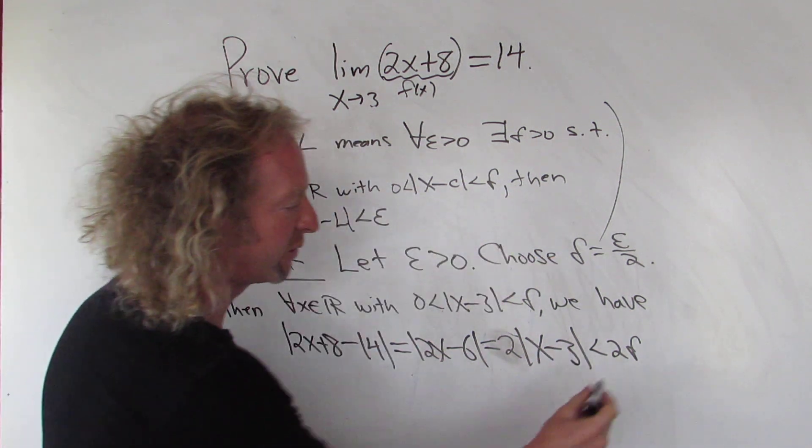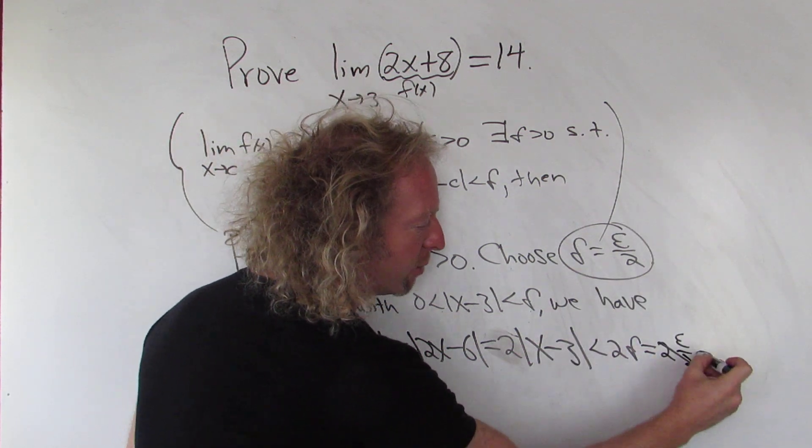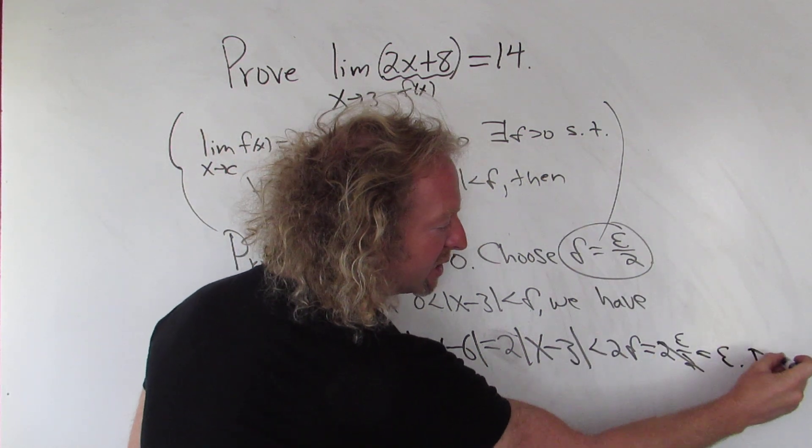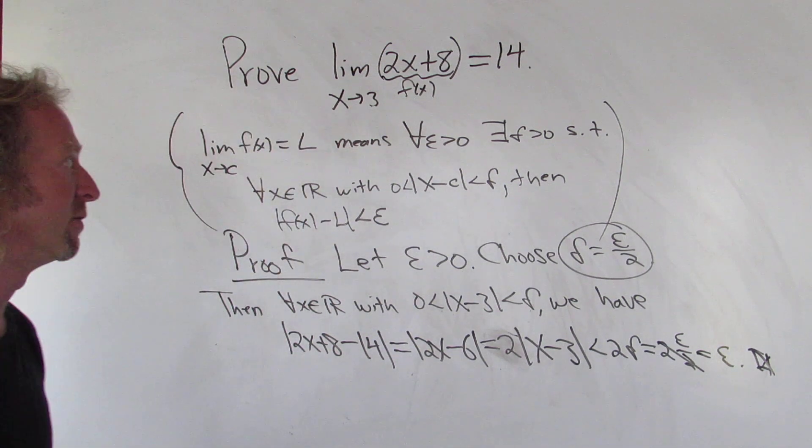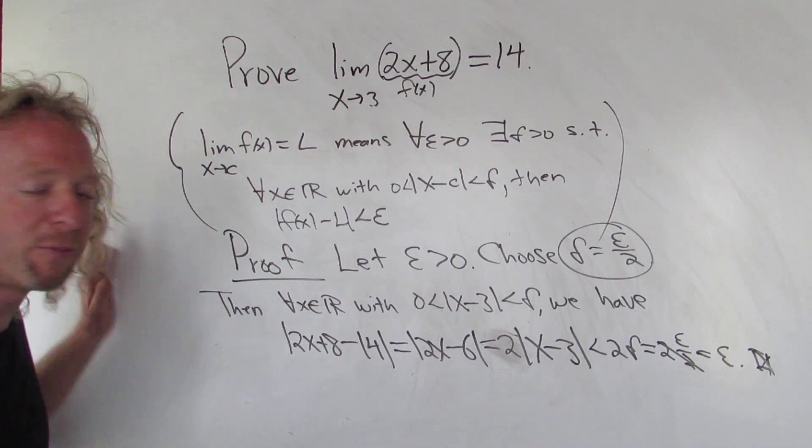Delta is epsilon over 2. So this is equal to 2, right? That's up here. Epsilon over 2. And boom, the 2's cancel. And that completes the delta epsilon proof. So that's a full delta epsilon proof. I hope this helps. That's it.